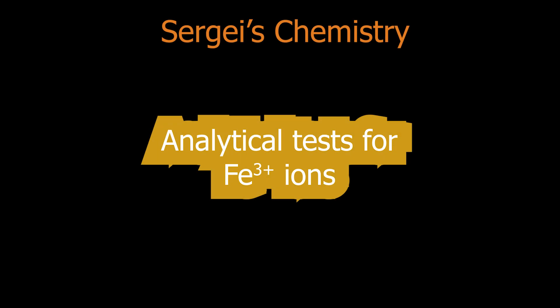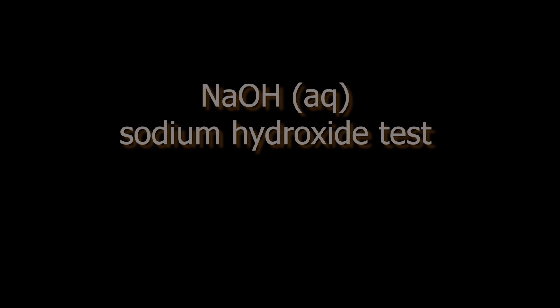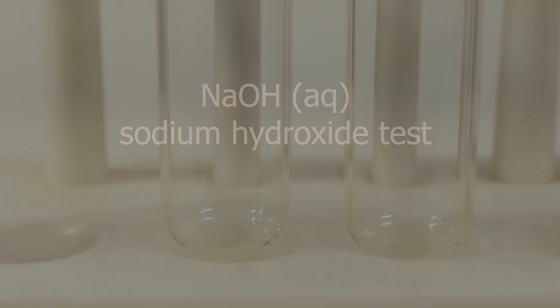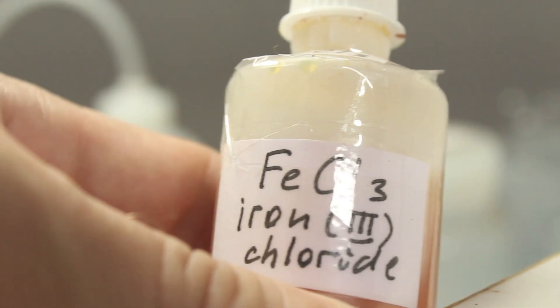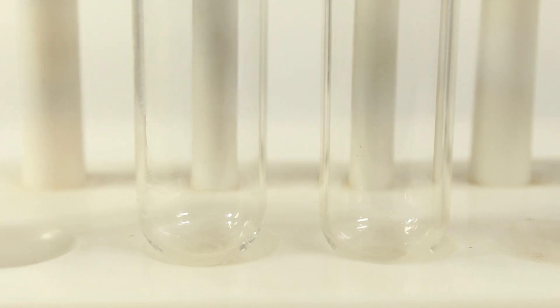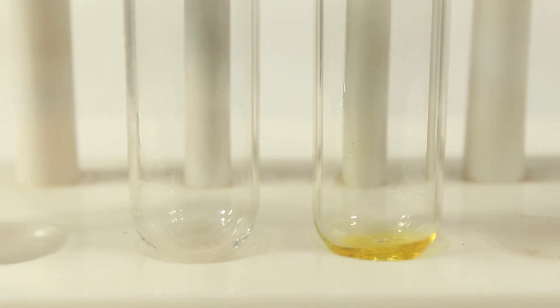Welcome to Sergei's Chemistry. Today we are looking at tests for iron-3 ions. First is sodium hydroxide test. Transition metal hydroxides are normally not soluble and they are colored. So this is the base for many of the tests.